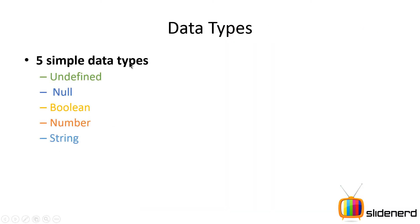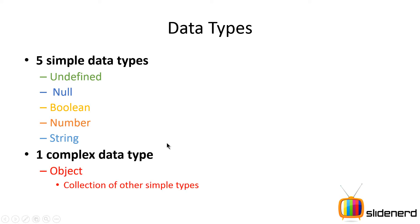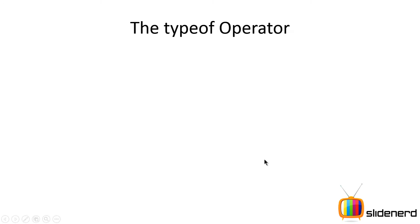There are five simple data types in JavaScript: undefined, null, boolean, number, and string. Other than that, there is one complex data type which is object, which is nothing but a collection of other simple types. Starting with this video and going forward, we are going to discuss each and every one of them in detail.